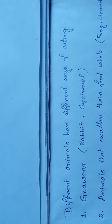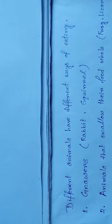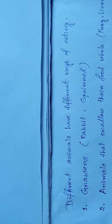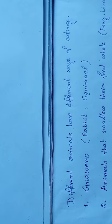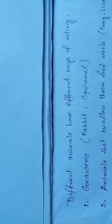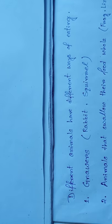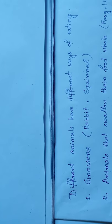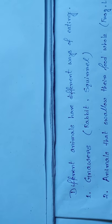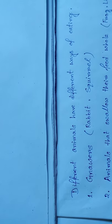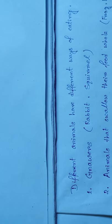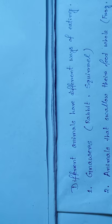Some animals swallow their food. For example, frogs, lizards and snakes do not use teeth to bite or chew their food. Frogs and lizards catch their prey with the help of a sticky tongue. The snake can open its mouth very wide to swallow its prey. In fact, a snake can eat animals which are bigger than them in size.